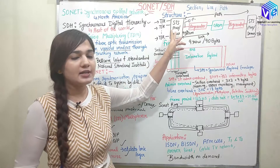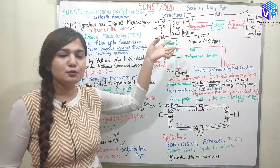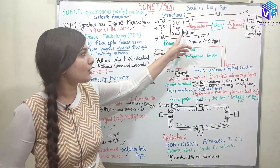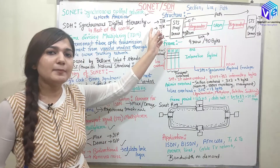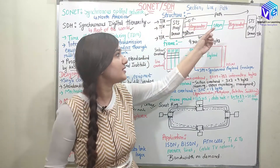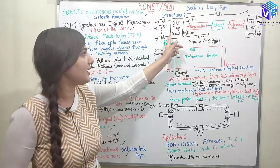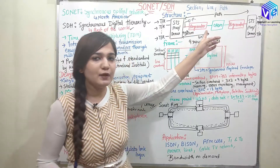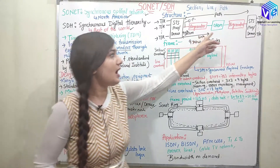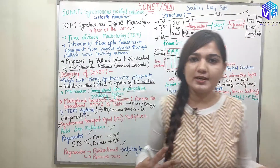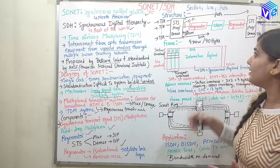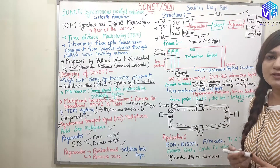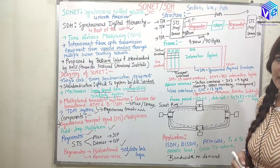A section is the connection between two equipments, and a link is the longer connection between multiple segments. Here we have the STS multiplexer and the OADM. After that we can use a regenerator if required, and then the STS MUX/DMUX again.